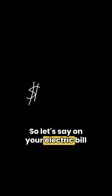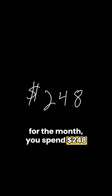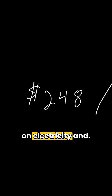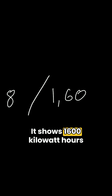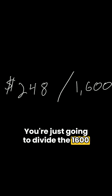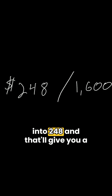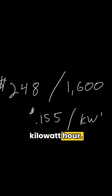So let's say on your electric bill for the month you spend $248 on electricity and it shows 1,600 kilowatt hours used for that month. You're just going to divide 1,600 into 248, and that'll give you a cost of 15 and a half cents per kilowatt hour.